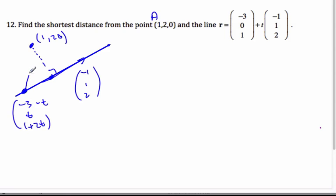And so if I make this vector here by subtracting it, I'll call this point B. So if I find vector AB, which is going to be, oh sorry, I'll call it the other way around, BA. So it's 1 subtract that, which is going to be 1 plus 3 is 4 plus t.